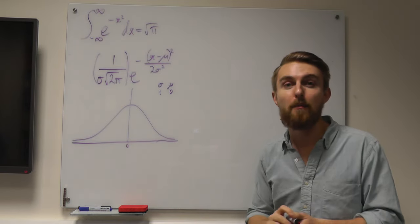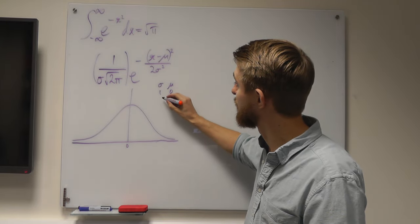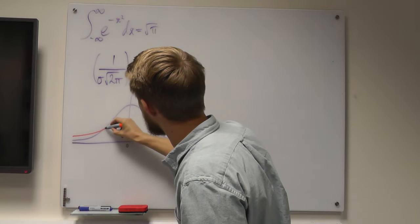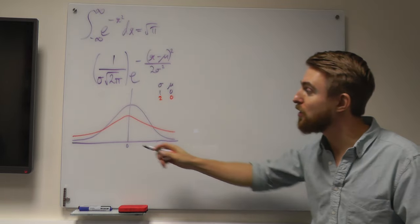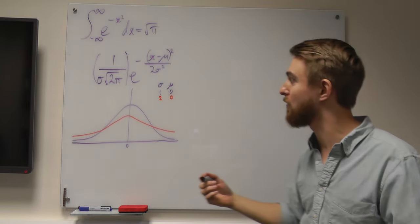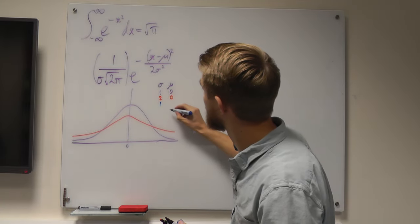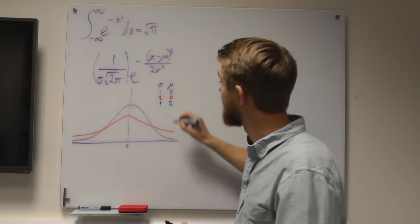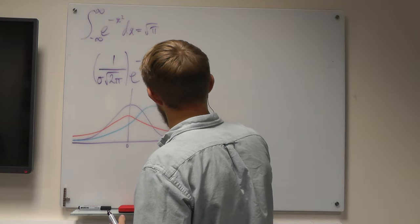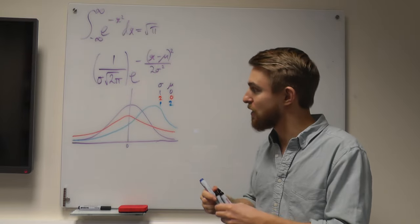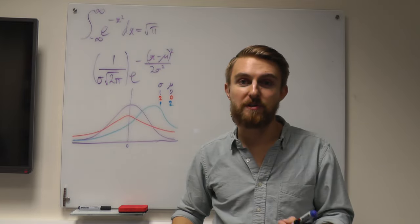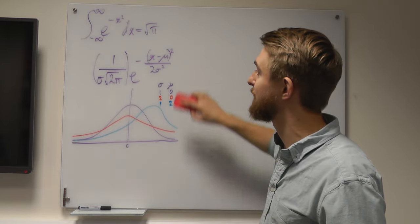For example, if we change sigma to equal 2 and keep mu at 0, that makes our function broader. You'll notice the tails are now higher than in the previous curve because the area under the curve still has to equal 1. Another alternative is to keep the standard deviation at 1 and move the mean over to 2. These are just three examples — you can put any values you want for standard deviation and mean and still get a total area of 1.